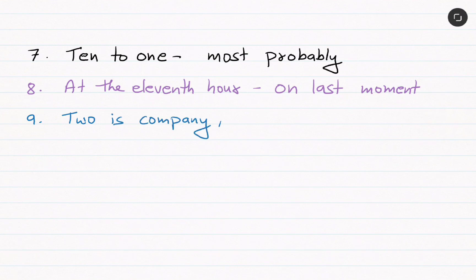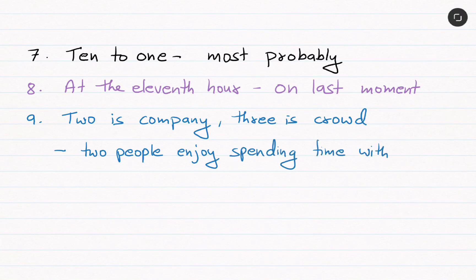'Two is company, three is crowd.' That means two people enjoy spending time with each other.